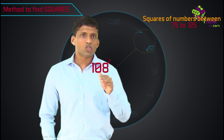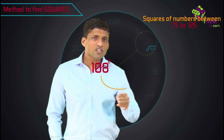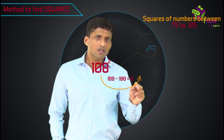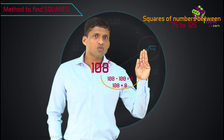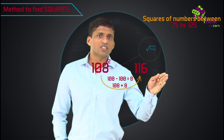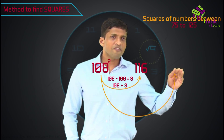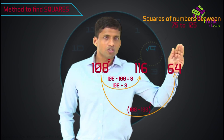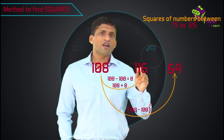Let's take 108 square. Take the difference from 100: 108 minus 100 equals plus 8. Add it to the number itself: 108 plus 8 is 116, which will be the first three digits. The same difference — 8 — squared gives 64 as the last two digits. So 108 square is 11664.